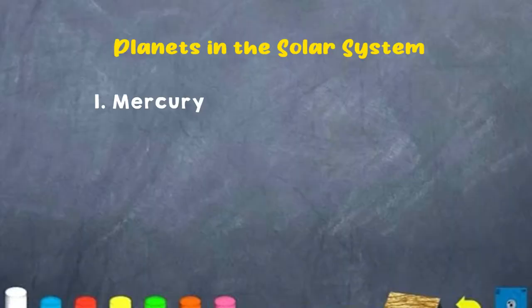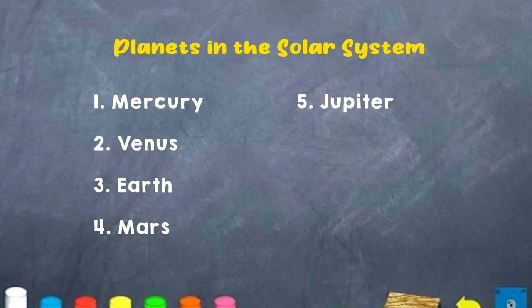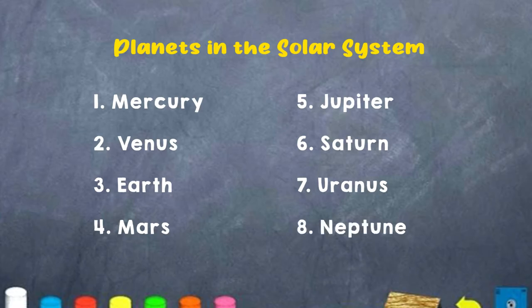Let us move right on into the planets. Boys and girls, can you name the planets found in the solar system? The planets found in the solar system are: one, Mercury; two, Venus; three, Earth; four, Mars; five, Jupiter; six, Saturn; seven, Uranus; eight, Neptune.